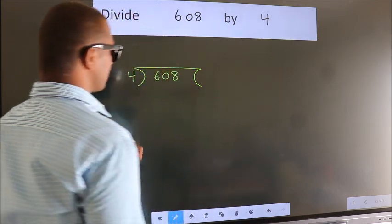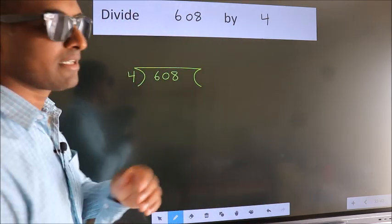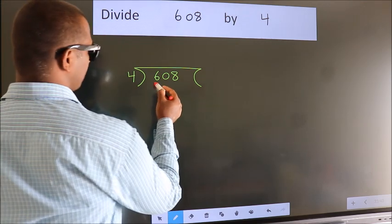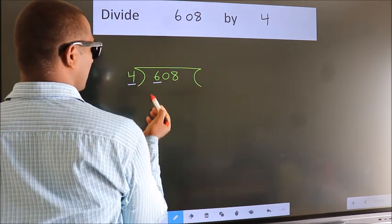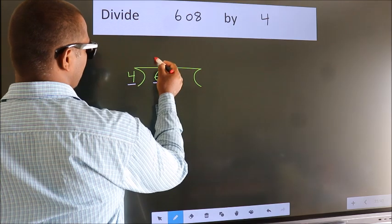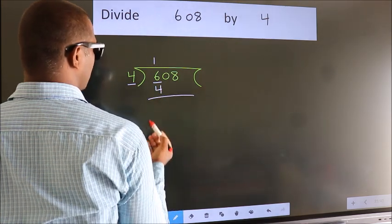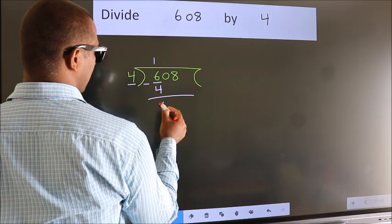This is your step 1. Next, here we have 6, here 4. A number close to 6 in the 4 table is 4 once 4. Now, we should subtract. We get 2.